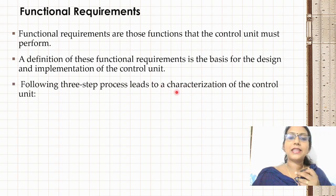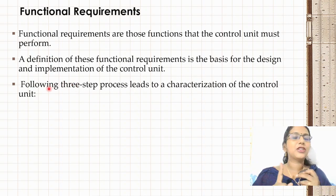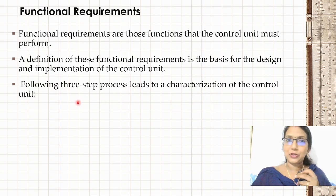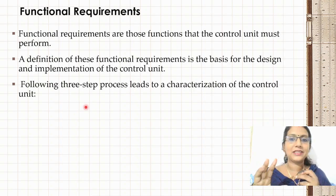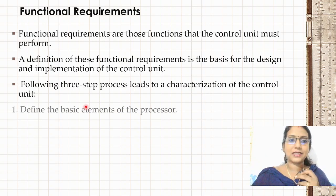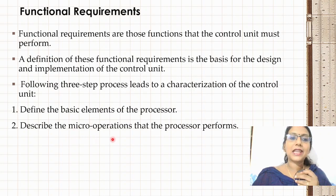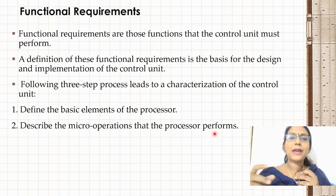A following three-step process leads to a characterization of a control unit. If asked in a university exam to explain the three-step process, this is important. Step one: define the basic elements of the processor — the basic elements of a processor include the control unit. Step two: describe the micro-operations that the processor performs.